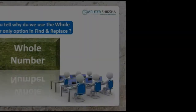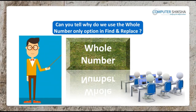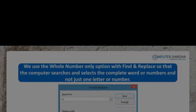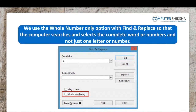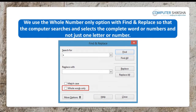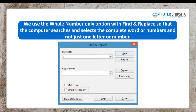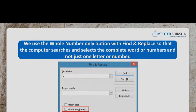Can you tell why do we use the whole word only option in find and replace? We use the whole word only option so that the computer searches and selects the complete word or numbers and not just one letter or number.